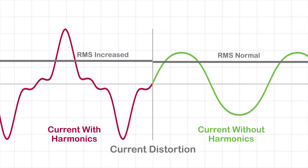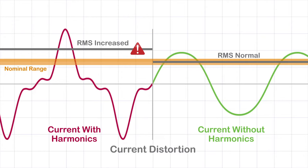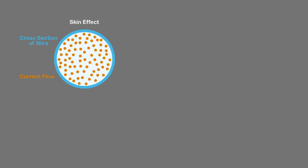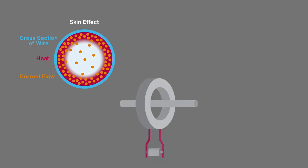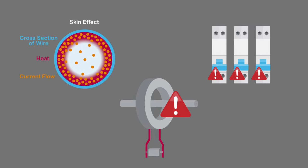Current distortion increases the electrical distribution network RMS current that can cause skin effect on a conductor, overload transformers, and nuisance tripping of circuit breakers.